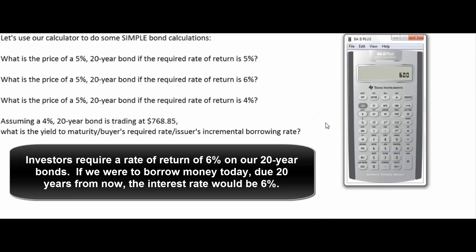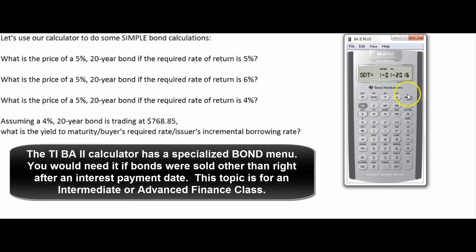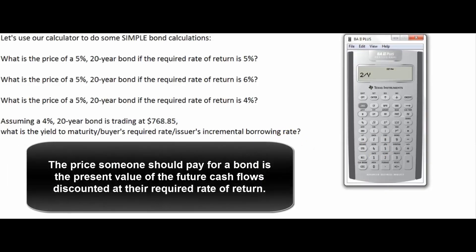What happens if we sell a bond between interest payment dates? In that case you'd use the bond menu on the calculator, where you input the settlement date, the coupon rate, the redemption date, whether you receive one hundred percent of face value at the end, the day-count convention (actual/365 or 30/360), and whether interest is paid once or twice a year. That bond menu is beyond the scope of this video, but you should know it exists and can handle complicated bond calculations for between-period transactions.